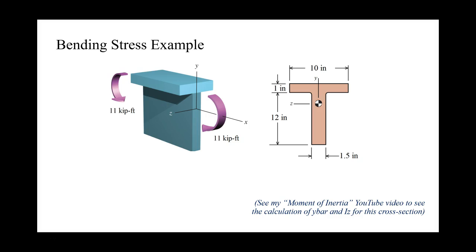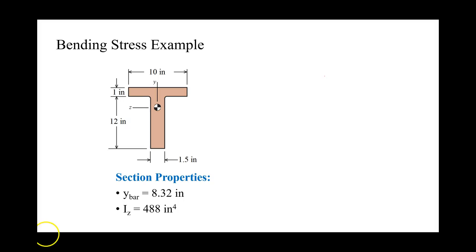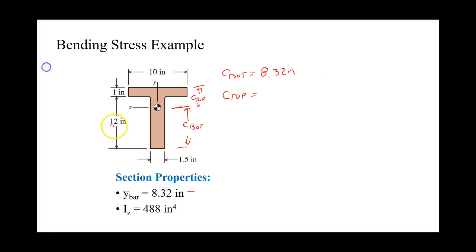If you'd like to see the details on calculating the section properties for this cross section, see my moment of inertia YouTube video — I'll put a link in the about section. Y-bar is 8.32 inches, which is the distance between the bottom surface and the centroid. I_z is our moment of inertia about the z-axis. C_bottom is the distance between the centroid and the bottom surface, which equals y-bar, so 8.32 inches. C_top is the distance between the top surface and the centroid: 13 inches minus 8.32 inches equals 4.68 inches.